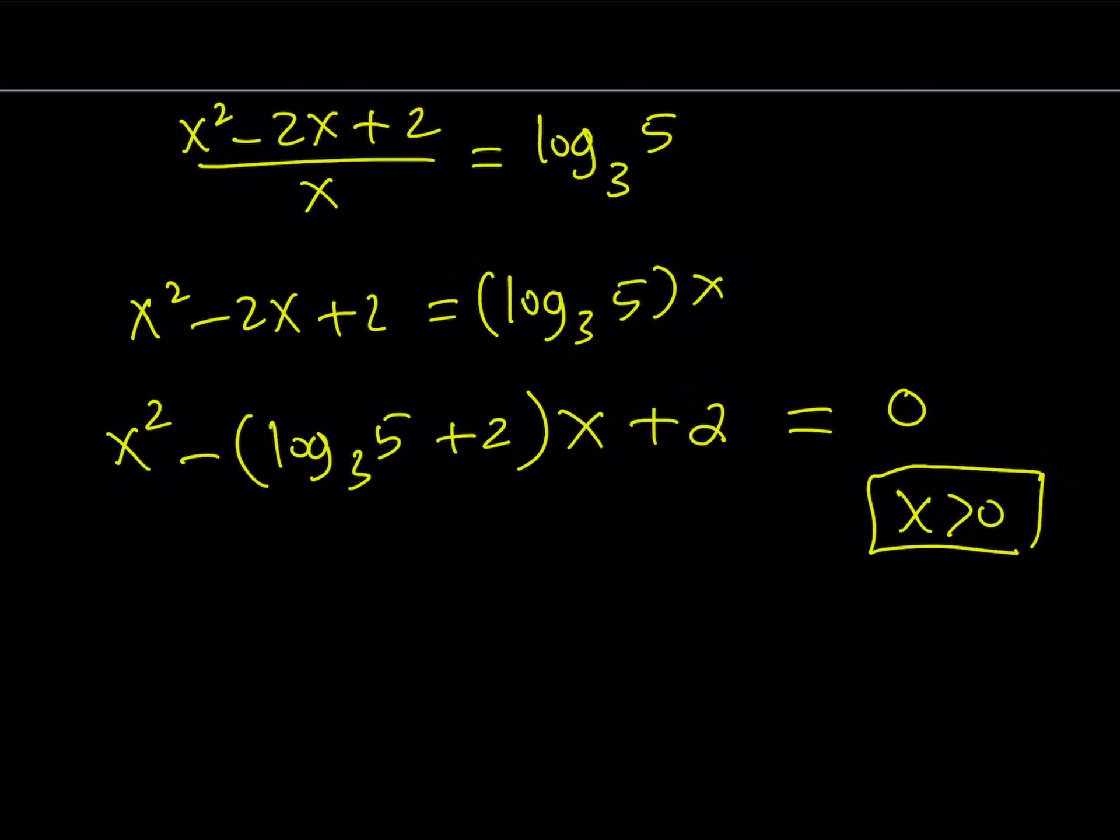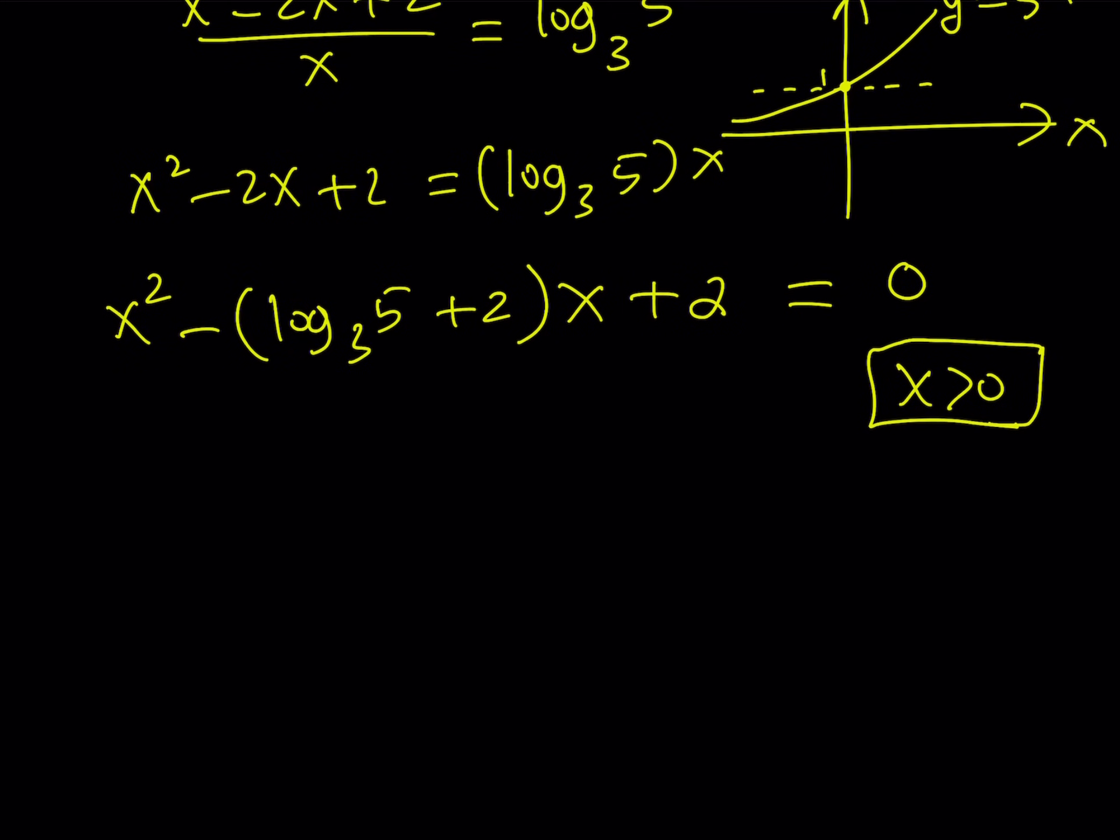When we solve this equation, we have to make sure that all the solutions are greater than 0. You can also look at it this way. If you consider the graph of 5 to the power x, it's going to look like this, pretty much. It's going to have a y-intercept here at 0, 1. And notice that the y values are greater than 1 if x is positive.